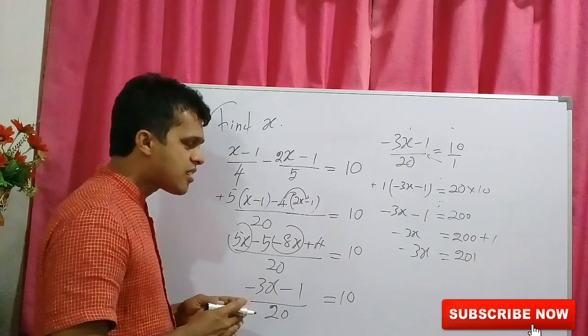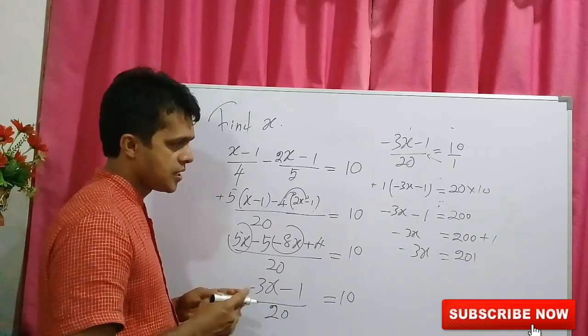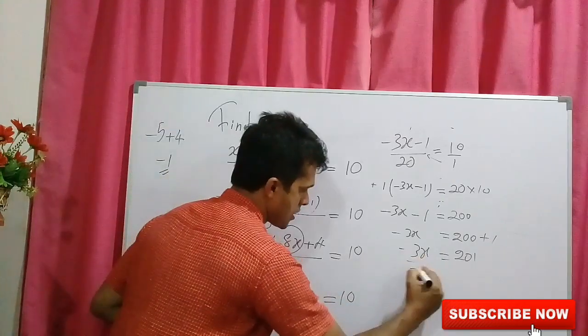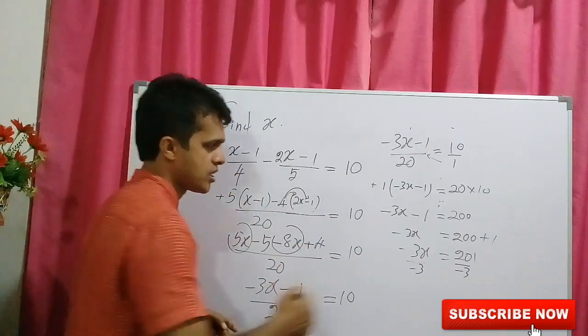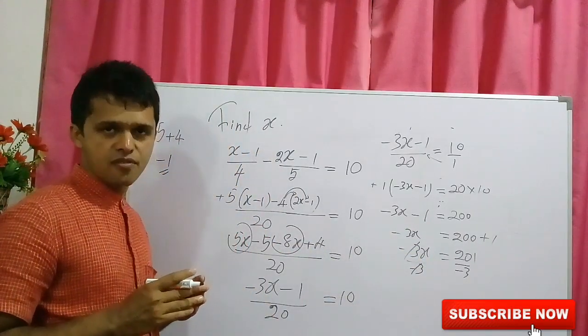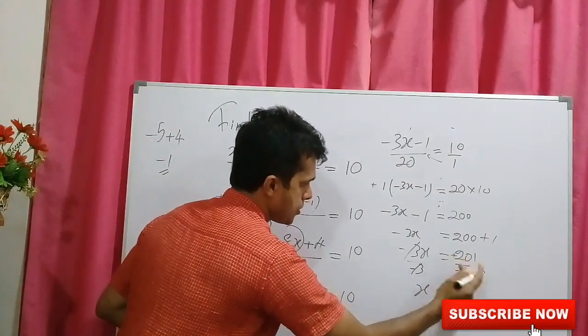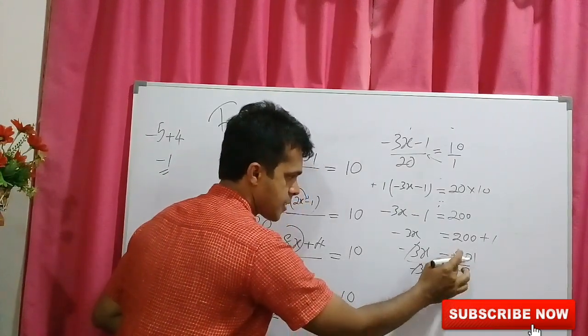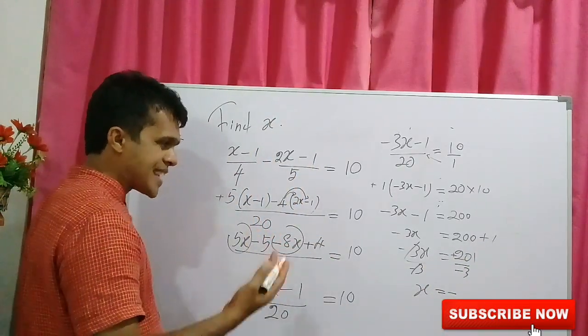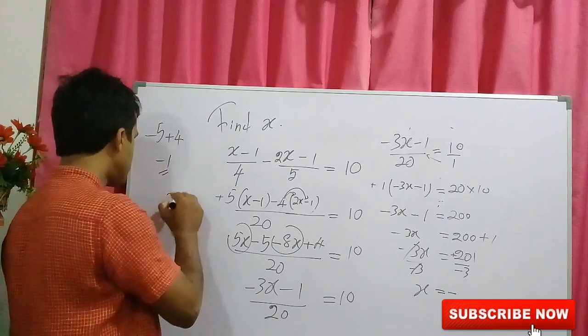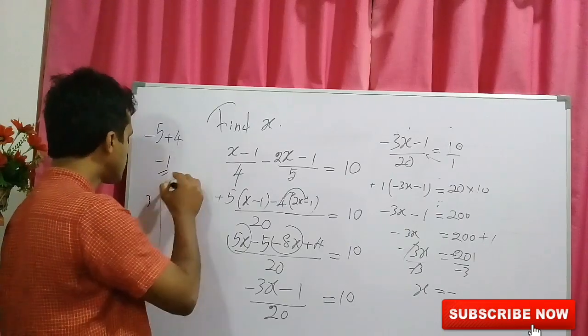Now, the equation, you could take the value of x by dividing negative 3, both sides. Both sides are divided by negative 3. So, negative 3 and negative 3 can be simplified. So, x equals, plus or minus, here plus, plus or minus is minus. You could put this as a mixed number. 201 is divided by 3. 20 over 3.